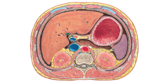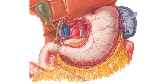Then the splenic artery travels in the splenorenal ligament, where it gives off short gastric arteries and the left gastro-omental or gastroepiploic artery. Finally, it terminates by dividing into numerous branches which enter the hilum of the spleen.